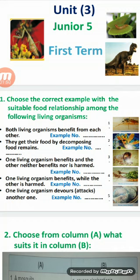The second type — they get their food by decomposing food remains. This type will be saprophytism. Its example will be number 5: bread mold fungus, because mold fungus decomposes bread.